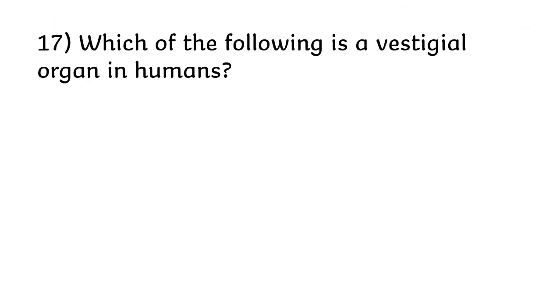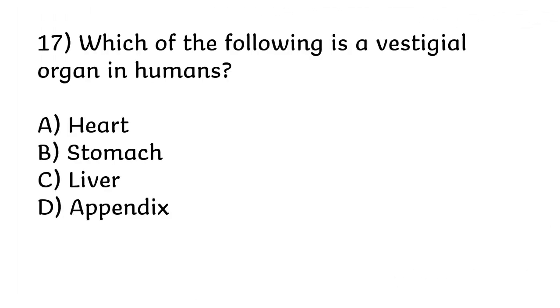Which of the following is a vestigial organ in humans? Heart, stomach, liver, or appendix. The correct answer is option D, appendix.